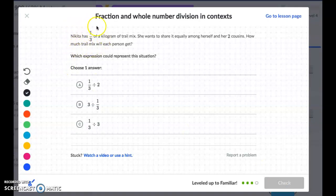Nikita has 1 third of a kilogram and that's what she's sharing or breaking into groups. So 1 third has to be the first number, and she's sharing it with herself and two cousins. So she's dividing it into three sections.